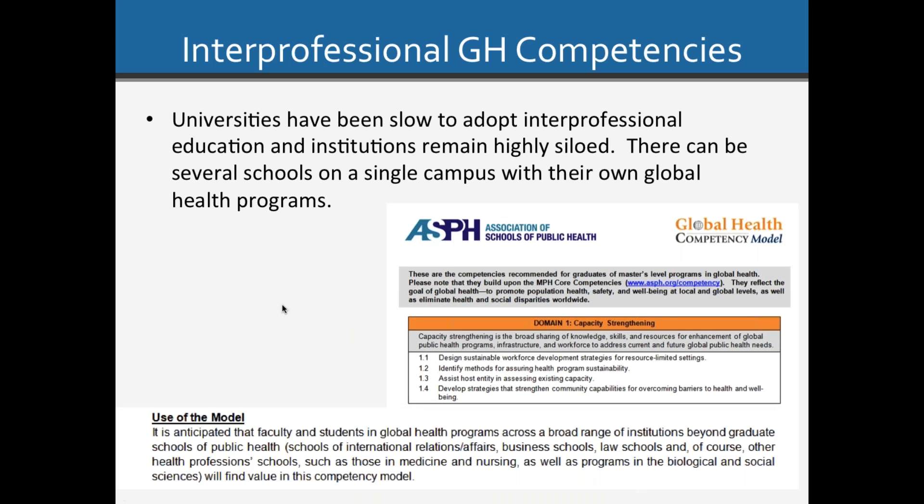However, universities have been slow to adopt interprofessional education, and institutions remain highly siloed, including in the area of global health. Innumerable universities support multiple global health programs in different schools on a single campus that don't necessarily talk to each other. The American Association of Schools and Programs of Public Health was the first to address this issue in 2011 when it published its global health competency model.